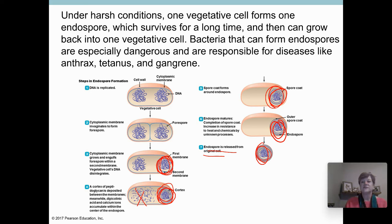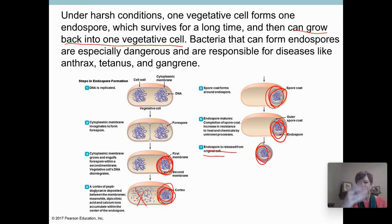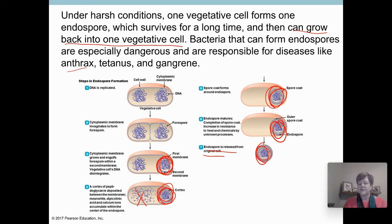As it says on the slide: one vegetative cell will ultimately form one endospore that can survive for a long time, and then it can grow back into one vegetative cell. It can become a vegetative cell again. There are a few diseases that come from either Bacillus or Clostridium, and we'll talk more about those when we cover pathogens.